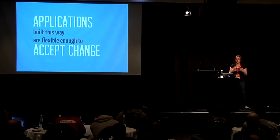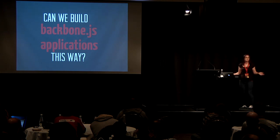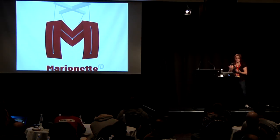Applications built like this are flexible enough to accept change — you can make a change to one small part that does one small job and it doesn't leak out everywhere. You can remove a module and nothing will break. You can change the internal workings of a module and nothing will break in the larger application. So can we build Backbone applications like this? We're all programmers — we could write our own code to implement these structures, or you could use a library. One library I like to use to achieve a scalable design is Marionette.js.